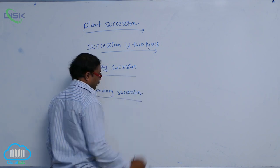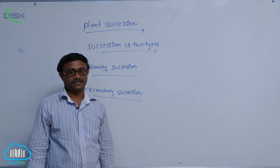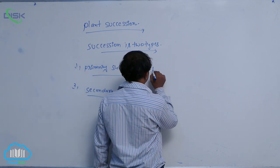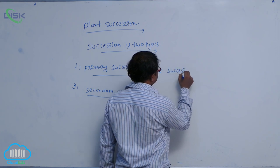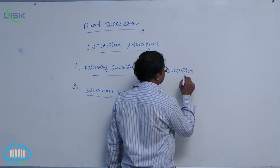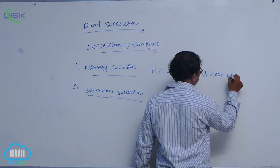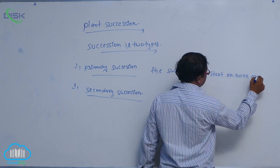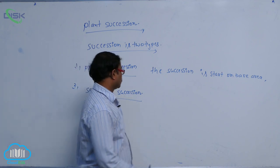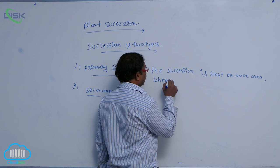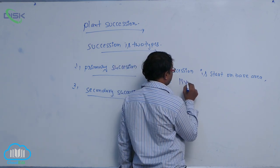In primary succession, living organisms have never existed. The succession occurs on a bare area where living organisms have not ever existed.